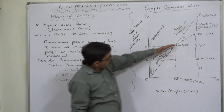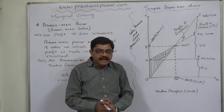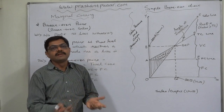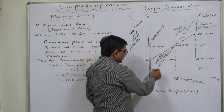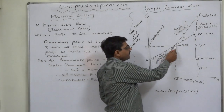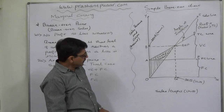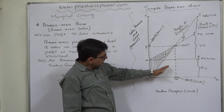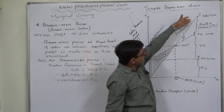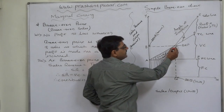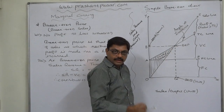Variable cost never increases at the same rate as sales increases, because variable cost per unit is always less than the selling price. So up to a certain point the sales line is below the total cost line; at one point both intersect each other, and after that the sales line is above the total cost line. Up to that intersection point, sales revenue is less than total cost; at that point both are equal; and beyond it, sales revenue is more than total cost. The intersection point is the break-even point.